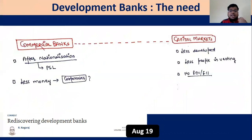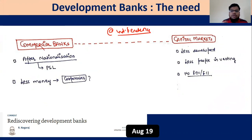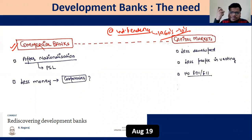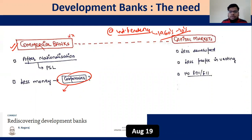Why were DFIs established at the time of independence? At the time of independence, if you needed big finance for infrastructure, you would go to commercial banks. But commercial banks had the obligation to do priority sector lending, so they had less money for corporates doing expansion, infrastructure, or opening more companies. Commercial banks were not a viable source of getting long-term money at low interest rates.